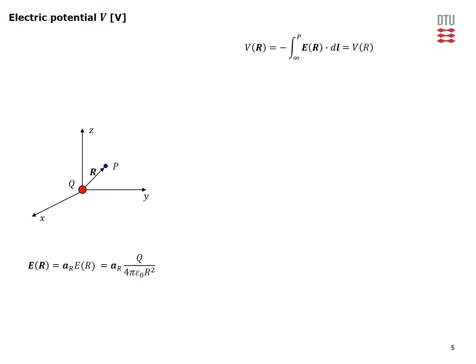We have determined the electric field at observation point P, and now we would like to determine the associated electric potential, which is given by a line integral of the electric field from infinity — where we have specified a zero reference potential — to our observation point. We are determining the electric potential at all points along this surface S at distance r from the point charge. This surface is called an equipotential surface because the potential is constant all over it.